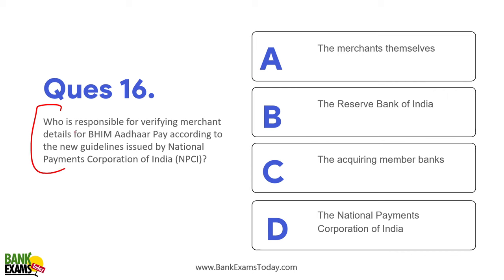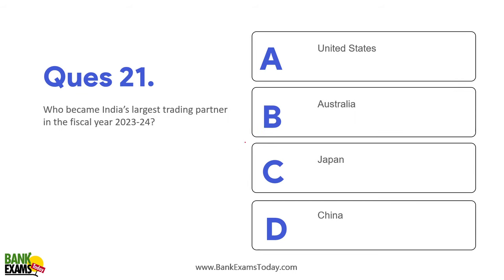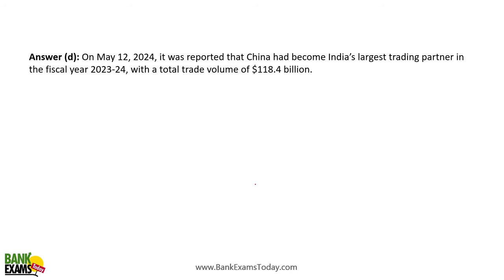Who is responsible for verifying merchant details for BHIM Aadhaar Pay? According to the new guidelines by NPCI, the acquiring member banks are responsible for verifying merchant details. What is the deadline for investment advisors to submit their periodic report for the half-year ended 31st March 2024? 15 days from the date of issuance of the circular. India's largest trading partner in 2023–24 is China — the largest trading partner with a significant trade deficit. Total trade volume is 118.4 billion dollars.